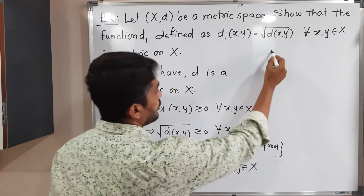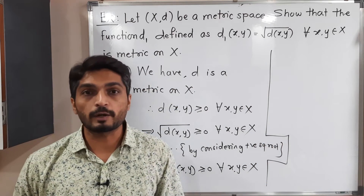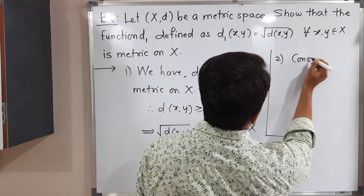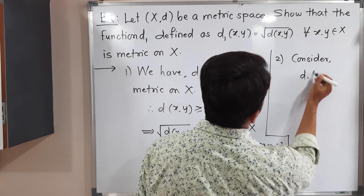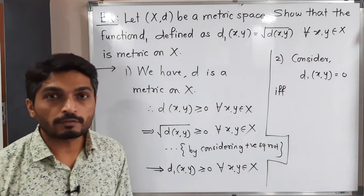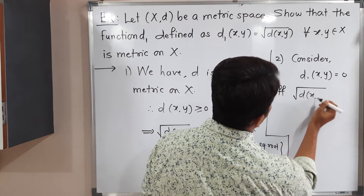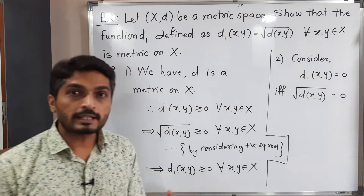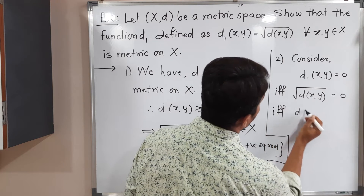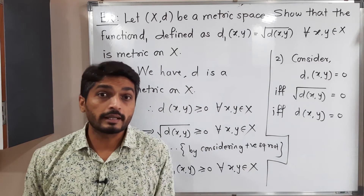Let us go for the second property. The second property is: d1(x,y) = 0 if and only if x = y. I will start with — consider d1(x,y) = 0 if and only if, by definition of d1, square root of d(x,y) = 0. I will take the square of both sides to remove the square root, so d(x,y) = 0.